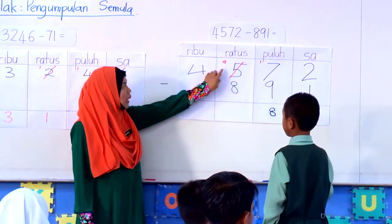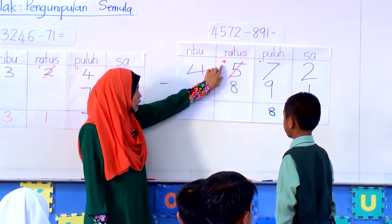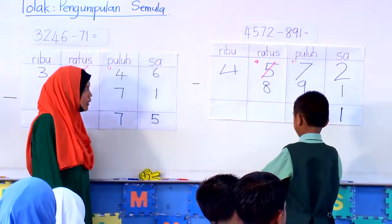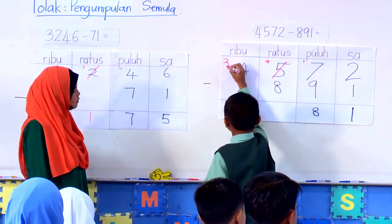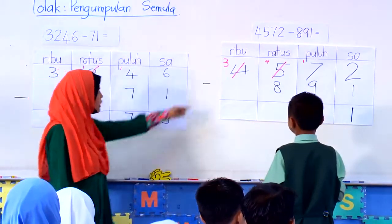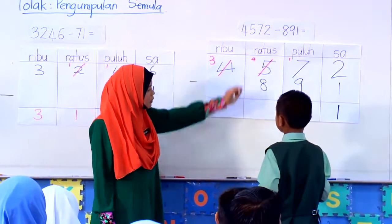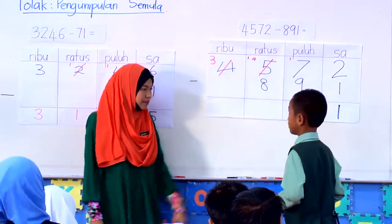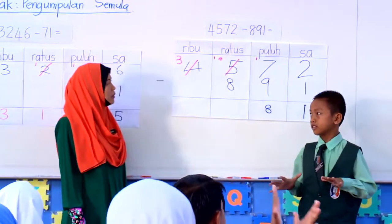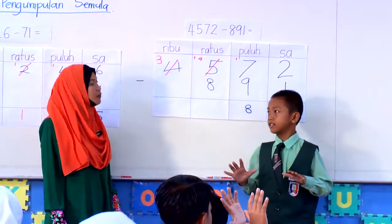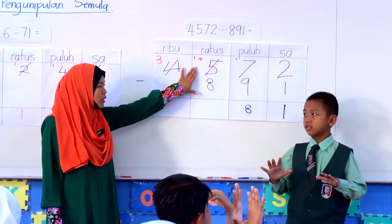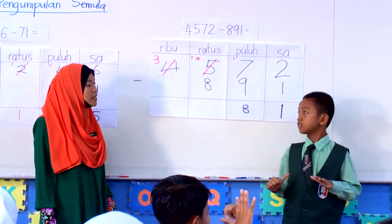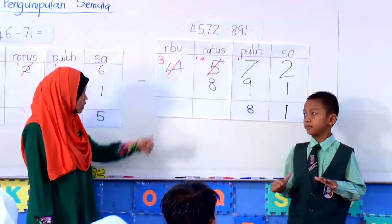Seterusnya, Zuhafizi, 4 ni sekarang 5 dah tak ada — kita dah tinggal 4. 4 boleh tolak dengan 8? Tak boleh. Apa yang kamu perlu lakukan? Pinjam. Silakan. Pinjam 3, lepas tu nak buat apa? Keluar 10 jari lagi. Kemudian kirakan dari mana? 4 ke atas. Nombor berapa nak mula? 5, 6, 7, 8. Sekarang berapa jari yang masih terbuka? 6. Tuliskan jawapan kamu.